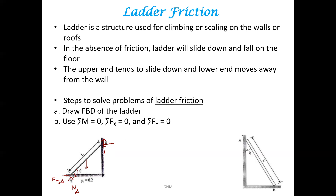In the second picture, the ladder makes angle theta with the vertical, so with the horizontal it will make 90 minus theta. For end B, if the ladder slips, the direction of motion is towards the right and therefore the friction force will be towards the left. For end A, if the ladder slips, end A will move down, so the friction force will be vertically upward.